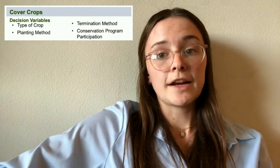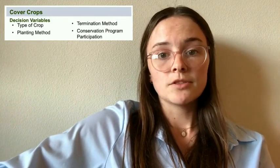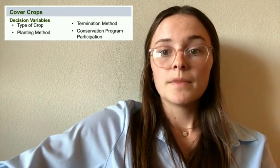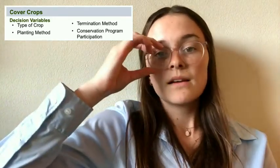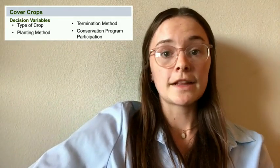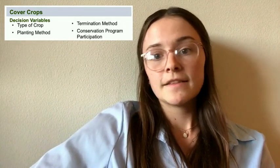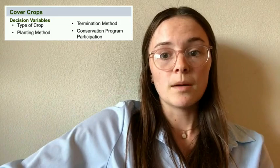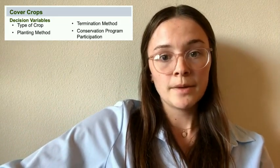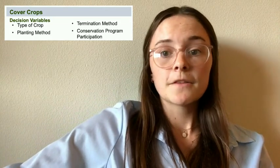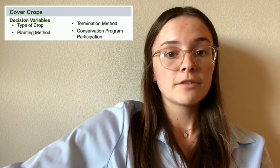For the cover crops decision, implementing cover crops begins with a binary decision to plant them or not. And if yes is chosen, then the farmer has to decide what type of crop — winter cereal rye and oats are very common ones — the planting method, either aerial or broadcasting the seed, the termination method, so how do you kill the crops before planting your cash crops, which can be done through tillage or through herbicides. And then finally, if they want to participate in a conservation program — there are ones that pay by the acre, ones that pay a flat rate, or ones that simply offer technical assistance.